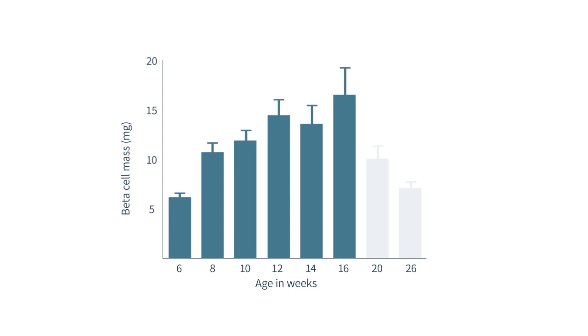This proliferation can only continue until a certain point, around week 16, at which time beta cell mass declines again.